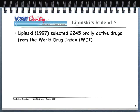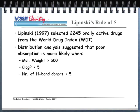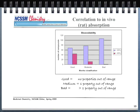Lipinski's Rule of Five: he selected about 2,000 orally active drugs from the World Drug Index in 1997. Drugs distribute poorly when molecular weight is greater than 500, log P is greater than 5, hydrogen bond donors are greater than 5, and hydrogen bond acceptors are greater than 10. We want all values below these thresholds for good absorption. In rat absorption data, these rules — log P, molecular weight, hydrogen bond donors and acceptors — determine whether we have good absorption.